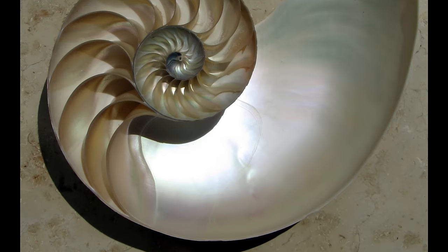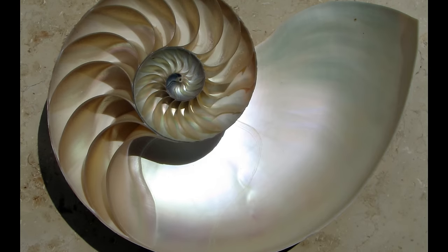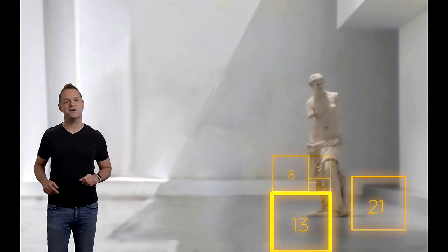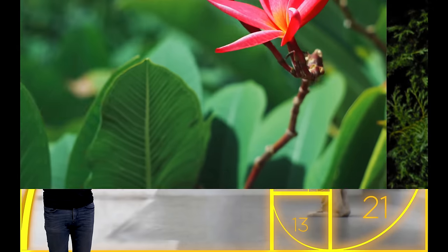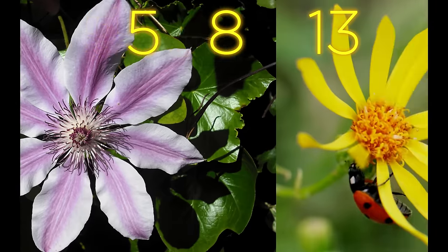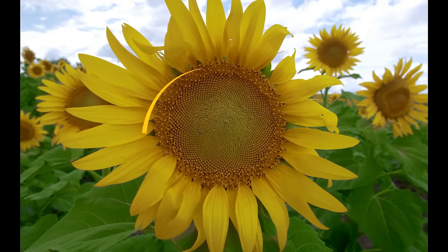One of the most obvious places you can see the golden ratio is in nature. Interestingly, and I imagine many of you out there don't know this, but these Fibonacci numbers correspond to the number of petals on a flower, seeds in a pinecone, and even spirals in a sunflower.